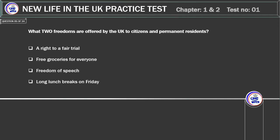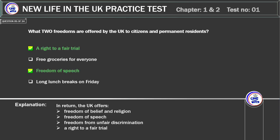What two freedoms are offered by the UK to citizens and permanent residents? A right to a fair trial. Free groceries for everyone. Freedom of speech. Long lunch breaks on Friday. Correct answer: freedom of speech and a right to a fair trial. Explanation: in return, the UK offers freedom of belief and religion, freedom of speech, freedom from unfair discrimination, and a right to a fair trial.